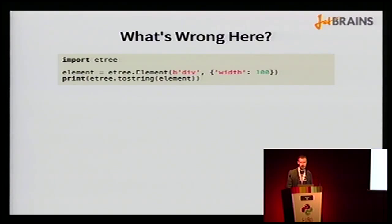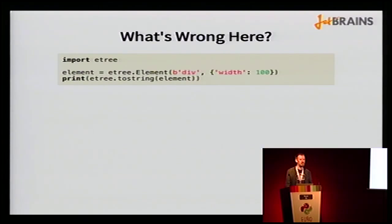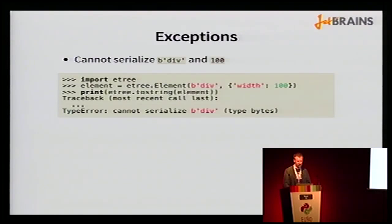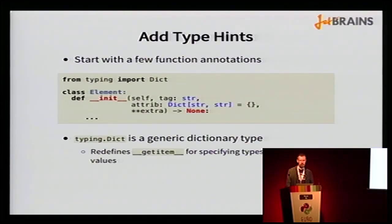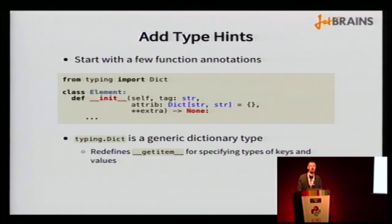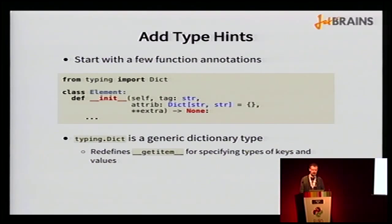Here's a little example of using the ElementTree library. If you're familiar with this API, you might notice some errors. The problem is a byte literal — when you run this code the result will be a type error because ElementTree cannot serialize binary data. There's also another error: you cannot specify integers as values of XML attributes. You'd have to run this program to find these errors if you're not familiar with the ElementTree API.